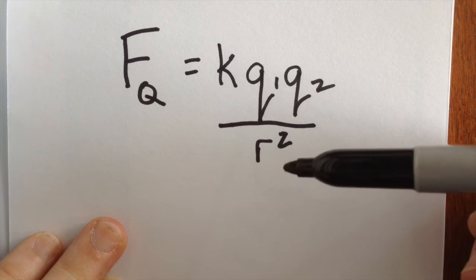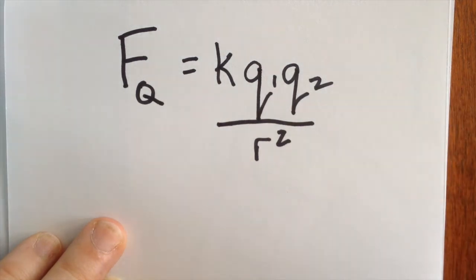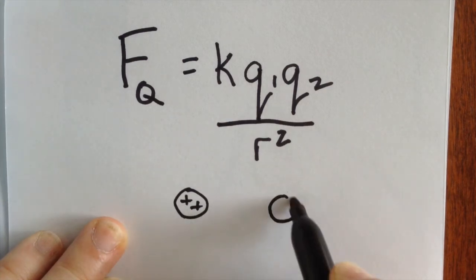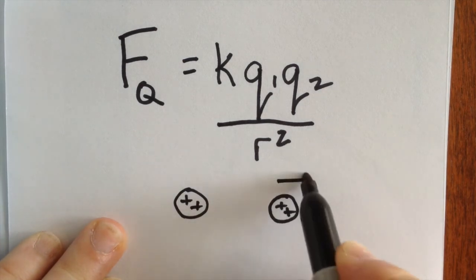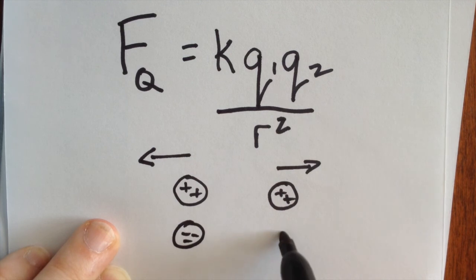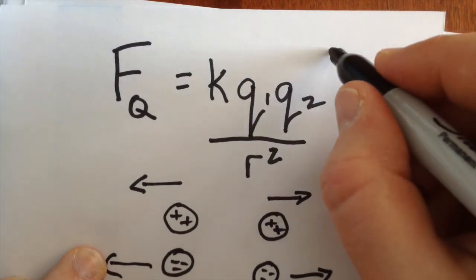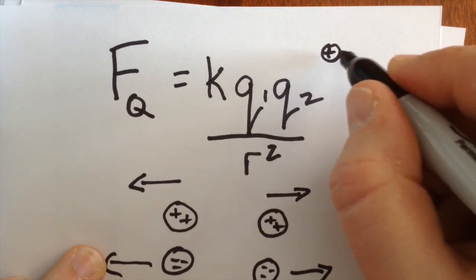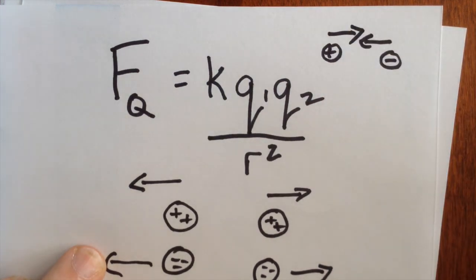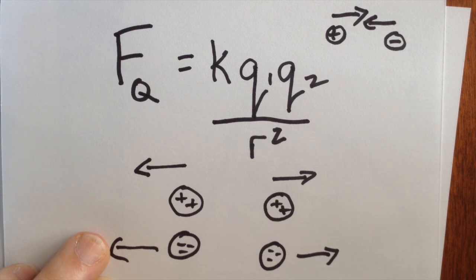We can plug in values and do all kinds of things with these, but the big thing to remember is we have to figure out the direction first. If we have something positively charged and something also positively charged, they are going to repel each other. If they are both negatively charged, they are also going to repel each other. If we have unlike charges — something positive and something negative — they are going to attract each other. So you need to figure out the direction before you start plugging things into your formulas and finding values.